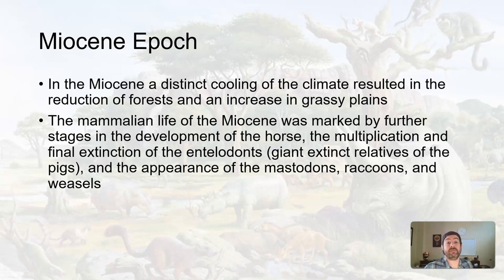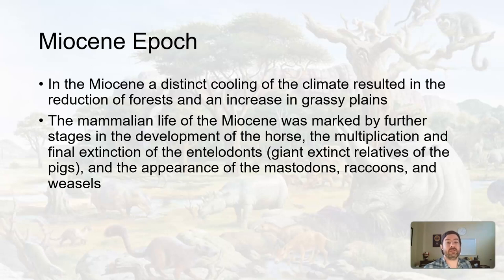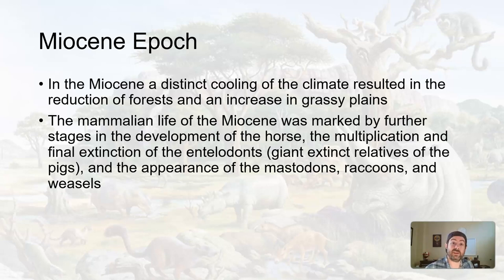The mammalian life of the Miocene was marked by further evolution of the horse, and the extinction of the entelodonts — the giant relative of the pig, that big pig bear-looking thing. But we also get the appearance of mastodons, raccoons, and weasels. That's a good time.